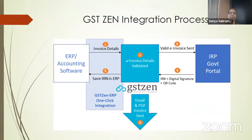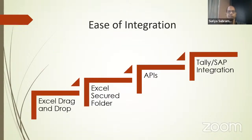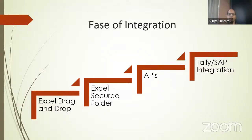GST Zen has multiple solutions. From left to right, we talk about solutions based on their ease of use. The Excel drag-and-drop solutions are easy to get started but require a bit more manual effort. Secure Folder has very little human intervention. If you use our APIs or Tally/SAP integration, you press a button and the invoice gets generated in milliseconds.